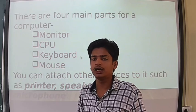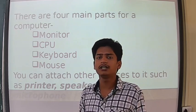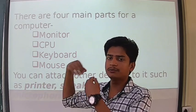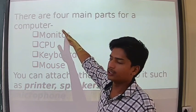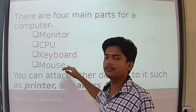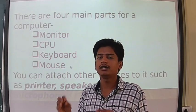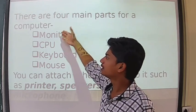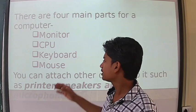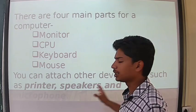The keyboard is mainly used for typing. All the alphabets are there on the keyboard, and we type using them. What we type on the keyboard is fed into the CPU, and from the CPU it is displayed on the monitor. The fourth main part is the mouse, which we use to select items. Many tabs are there, and if we want to click somewhere, we move the arrow with the mouse and click to select.